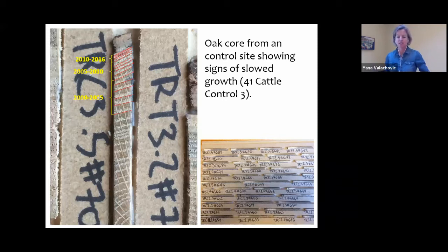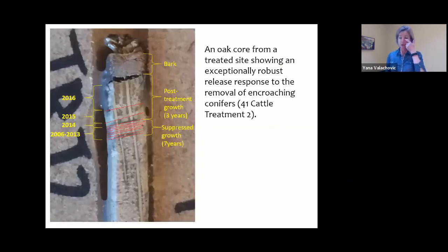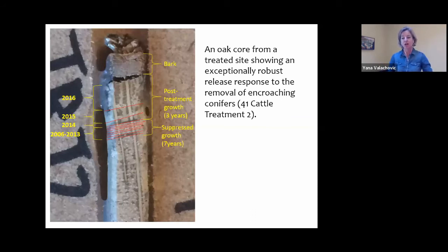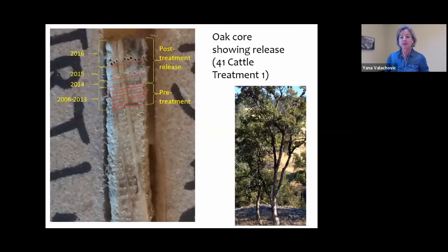This site didn't have restoration — it's one of our control sites — and you can see that the trees were slowing down during the same time period. In comparison, a tree again in Trinity County that we did a core on shows the separation between the red lines beginning to increase through time. So post restoration this tree is able to put on a rather rapid amount of growth in a short amount of time. It's a particularly dry site, so competition for water was really pronounced, and removal of conifers probably made a significant difference. Here's another Trinity County site where the increase in growth is quite evident.